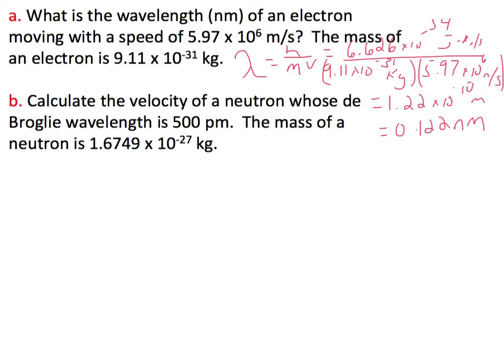Second question says, calculate the velocity of a neutron whose De Broglie wavelength is 500 picometers, and the mass of a neutron is given.